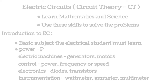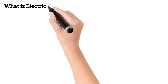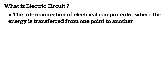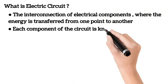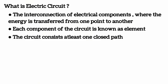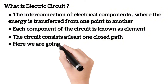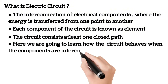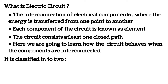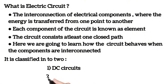An electric circuit is defined as the interconnection of electrical components where energy is transferred from one point to another. Each component in the circuit is known as an element. The circuit must have at least one closed path, because only in a closed path can current flow. Circuits are classified into two types: DC circuits and AC circuits, which we will learn in detail in upcoming lectures.